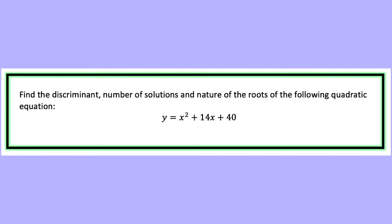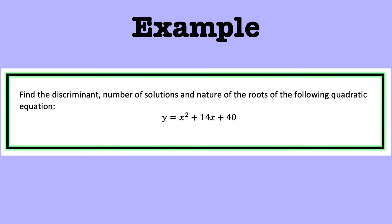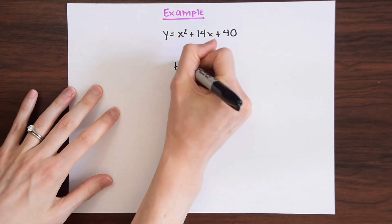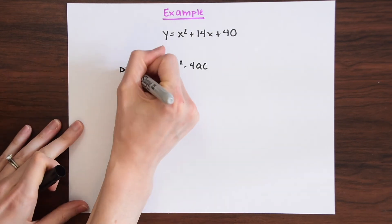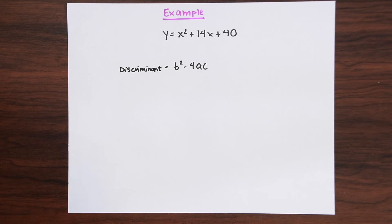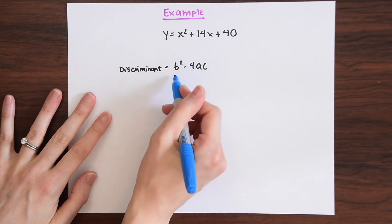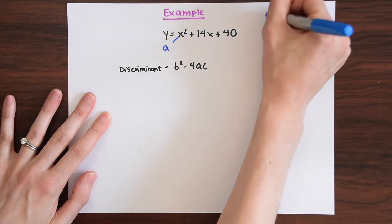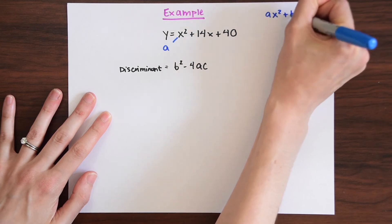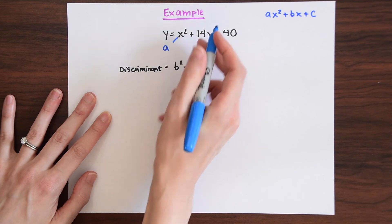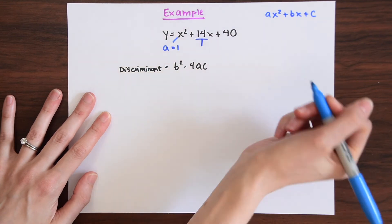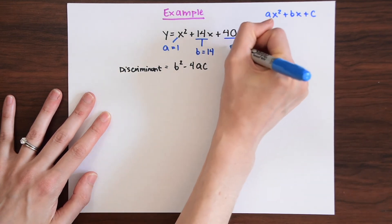So let's look at an example: find the discriminant, number of solutions, and nature of the roots of the following quadratic equation — y equals x squared plus 14x plus 40. Right away, I'm going to write out the discriminant formula: b squared minus 4ac. Remember, we get the values for a, b, and c from the coefficients of the quadratic equation ax squared plus bx plus c. So a equals 1, b equals 14, and c equals 40.